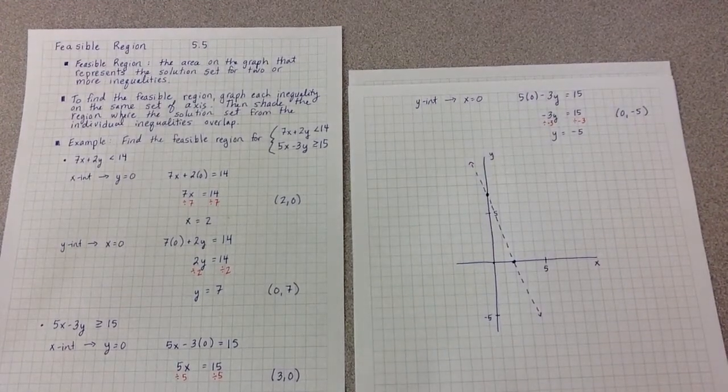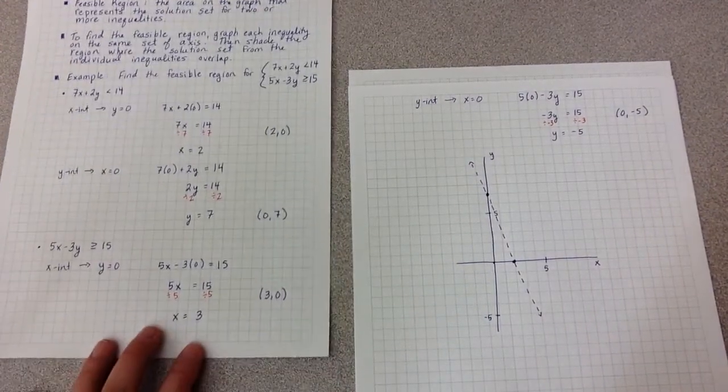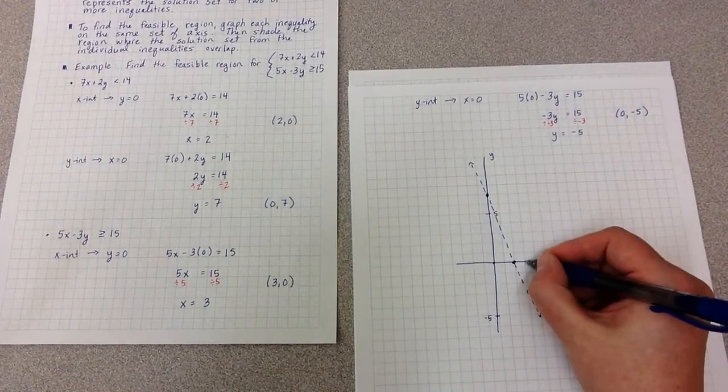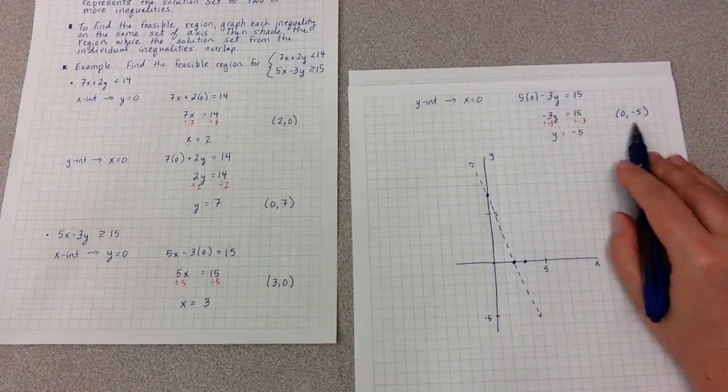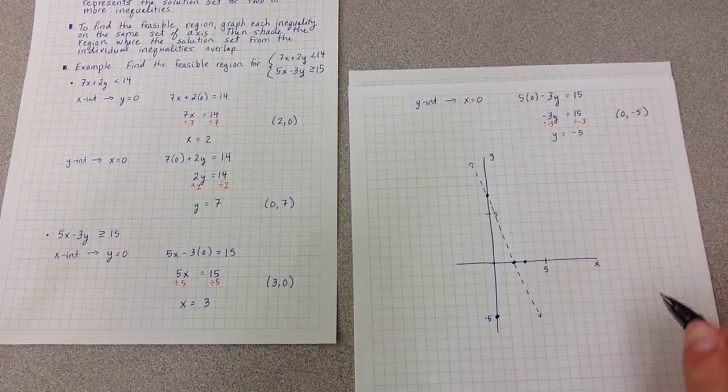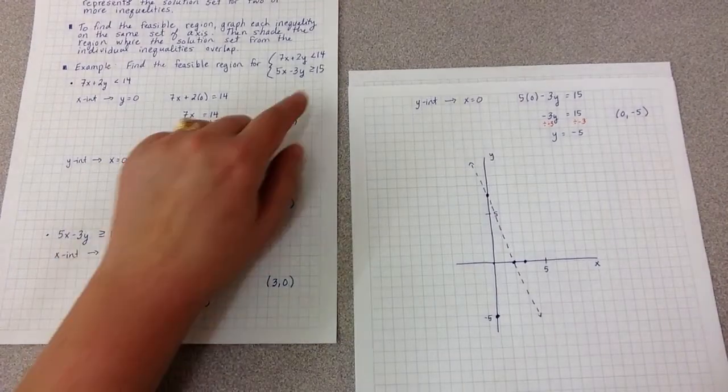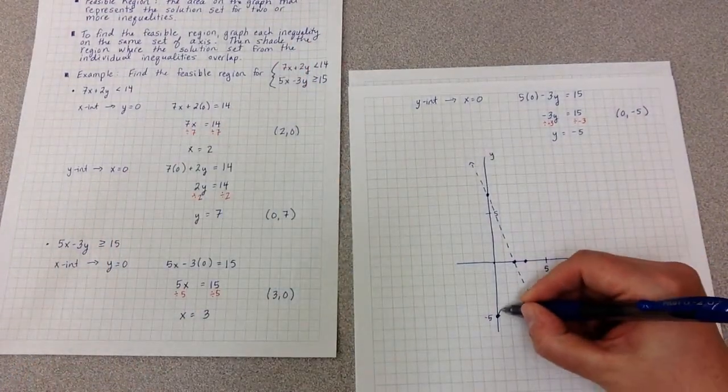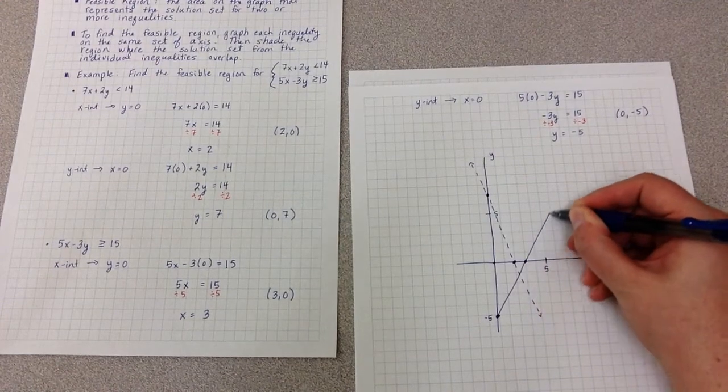I then am going to graph my second line. The two points on my second line are 3, 0, and 0, negative 5. This inequality, however, is greater than or equal to, and so the line connecting these two points is a solid line.